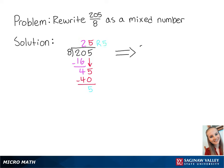This means that 205 eighths is equal to 25 and 5 eighths. This is the final answer.